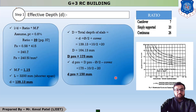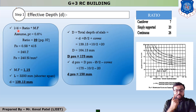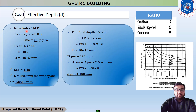Now we move to step number 1: find out effective depth. The equation is L/D = ratio × MF, where D is unknown. We need three values: ratio, MF, and L. From page number 37, for a cantilever slab the ratio is 7, for simply supported it is 20, and for continuous it is 26. Since we are designing a simply supported slab, the value of ratio is 20.